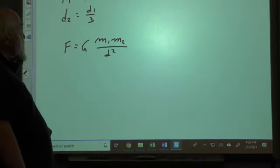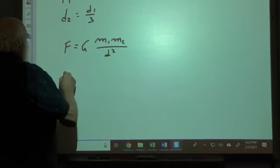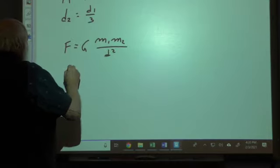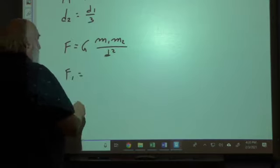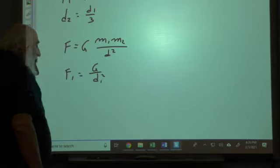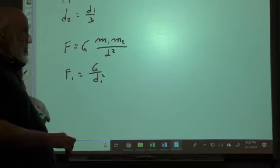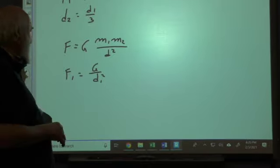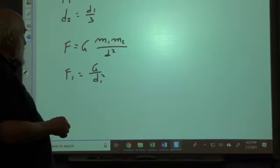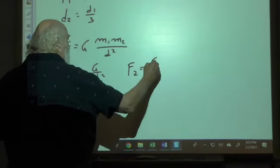F1 equals G over d1 squared. And technically I don't really need the G, but I'll come back to address that issue here. And F2 is going to equal G over d2 squared.